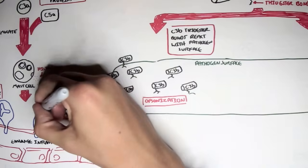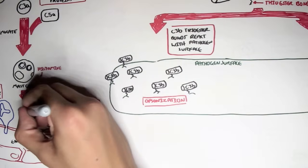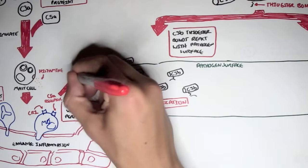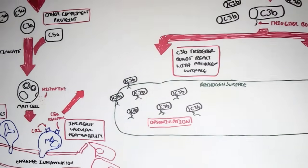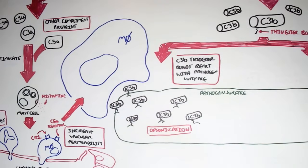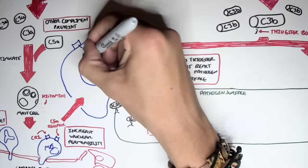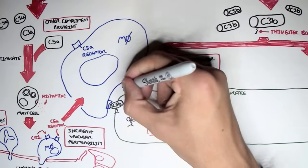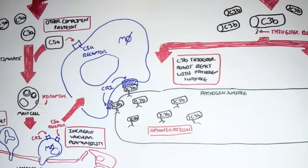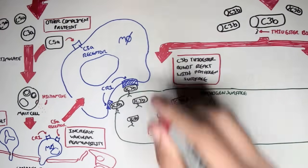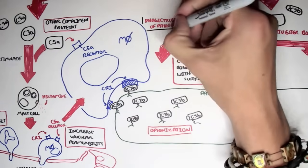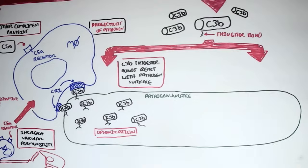A macrophage has two special receptors for complement proteins: CR1 and a C5A receptor. A macrophage cannot engulf a pathogen coated with C3B on its own — it actually needs the help of complement protein C5A. When C5A binds to the C5A receptor of the macrophage, this allows the macrophage to bind to the C3B protein through its CR1 receptors, and through this the macrophage can perform phagocytosis, eating up the pathogen.